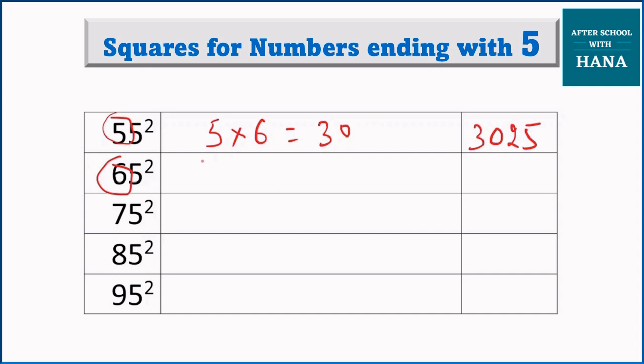65 squared. We will multiply 6 by 7, which is equal to 42. So 65 squared is 4225.